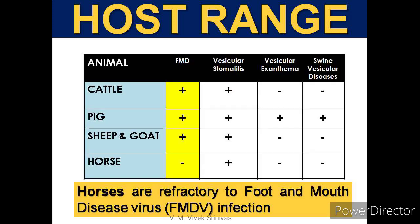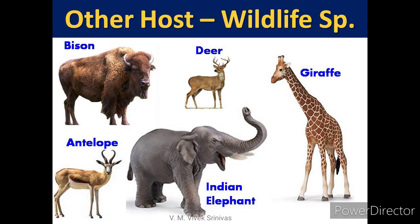This virus is refractory to horses. The table also shows other types of vesicular diseases in animals and their host susceptibility, such as vesicular stomatitis under Rhabdoviridae, vesicular exanthema under Caliciviridae, and swine vesicular disease under Picornaviridae. This infection also causes disease in wildlife species such as bison, deer, giraffe, antelope, and Indian elephant.